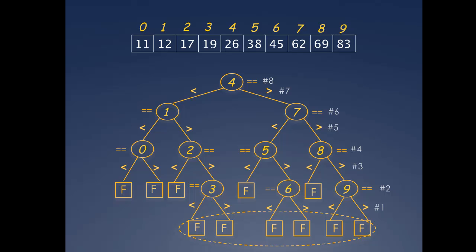So starting from any of these failure nodes and tracing the path to the root, you will count 8 comparisons. Another way to find the worst case number of comparisons for failure is to add 1 to the worst case number of comparisons for success.